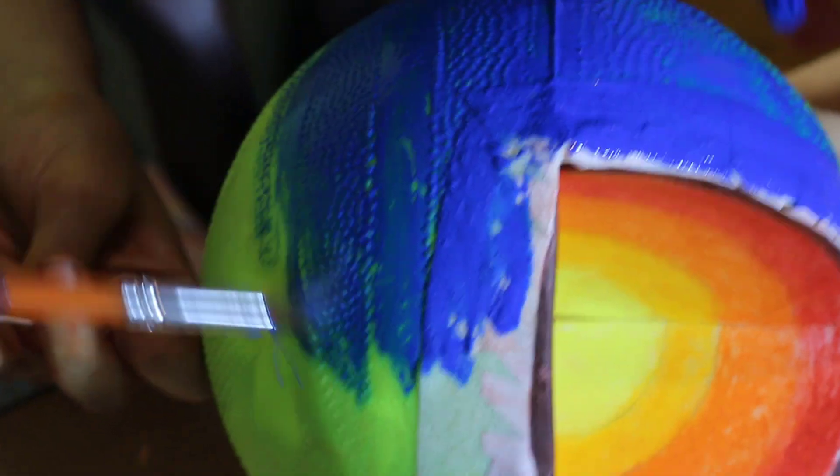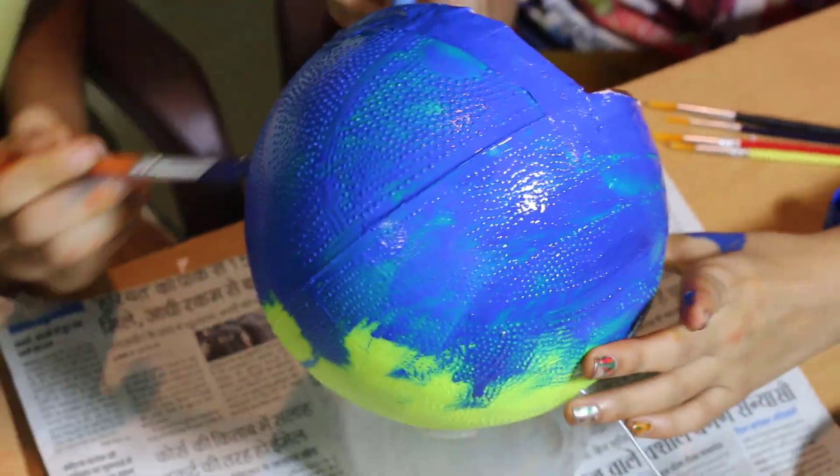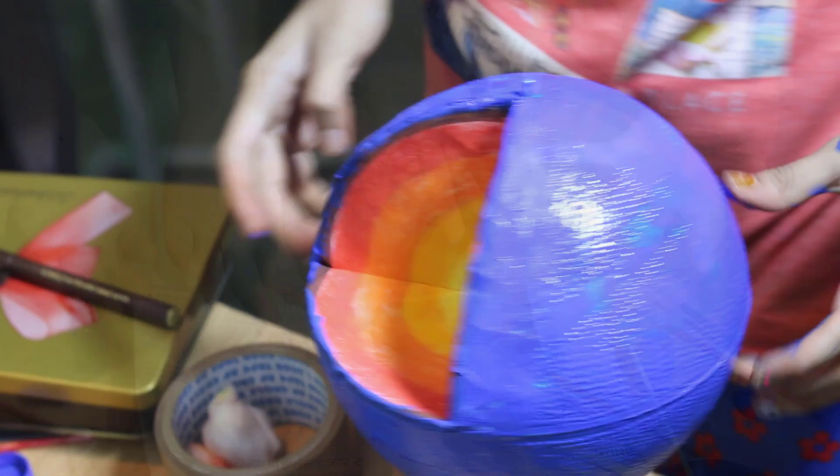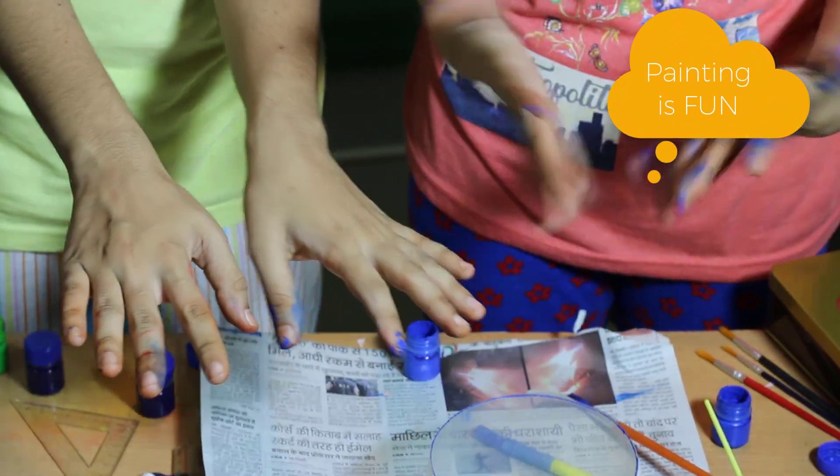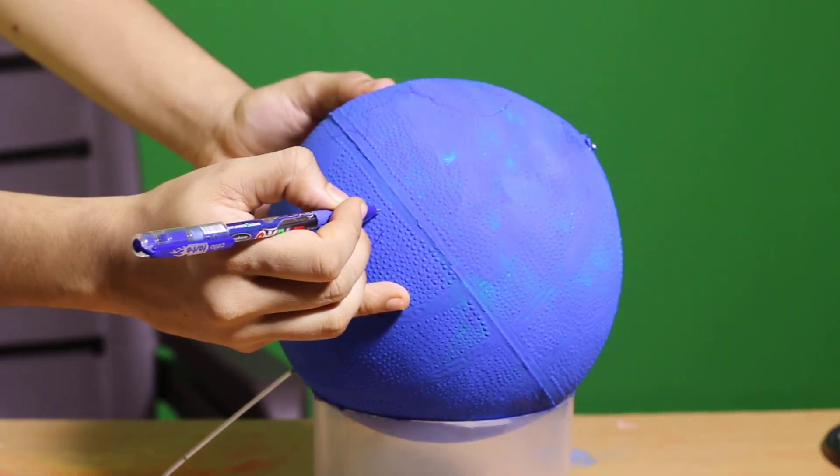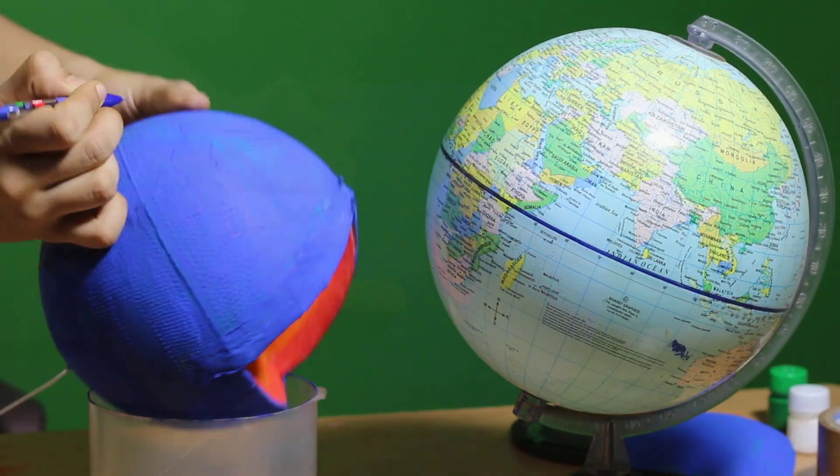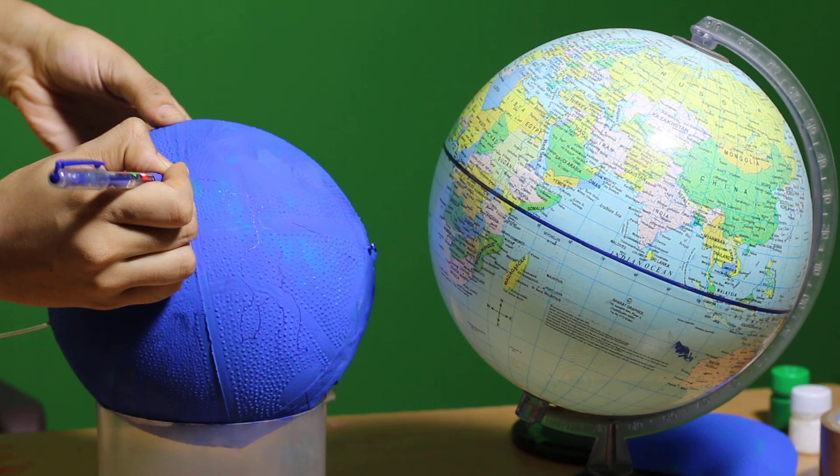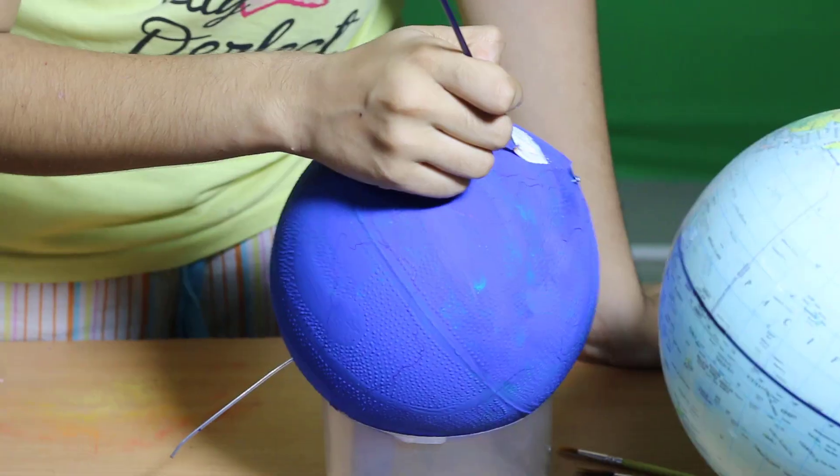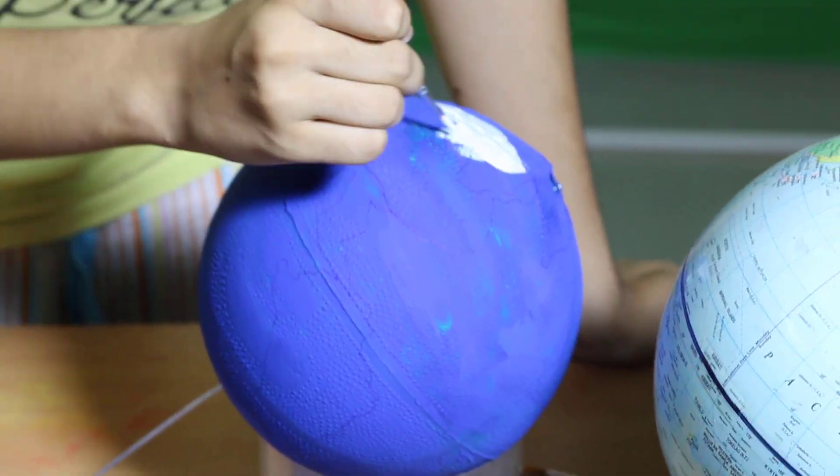Now start painting the surface of the ball with blue poster colors. After the color dries, keep a map and carefully mark the continents on the ball with a pen. Then paint it white or green as you wish.